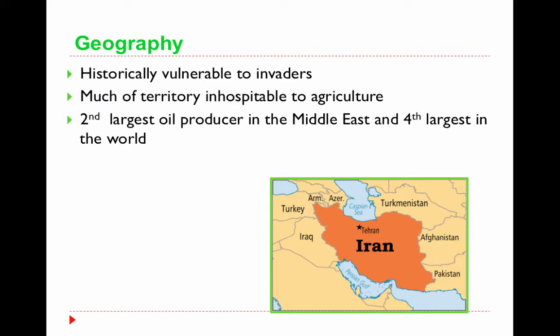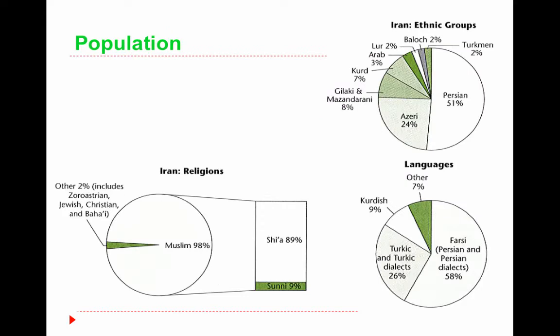Iran is the second largest oil producer in the region and the fourth largest in the world. Oil has been incredibly important, and something that tends to come up on the AP test is the danger of being a one-product country. It's very dangerous to rely only on one product because if that market struggles, it would hurt their entire economy. Iran is urbanized and partly industrialized — about 68% of people live in urban centers, and 70% of the labor force is employed in industry and related services.